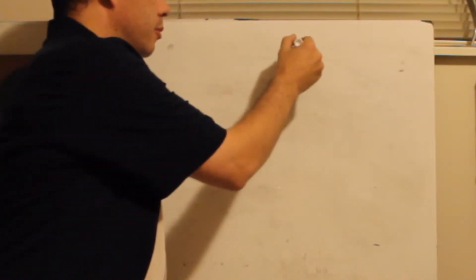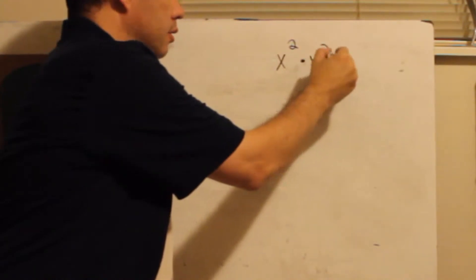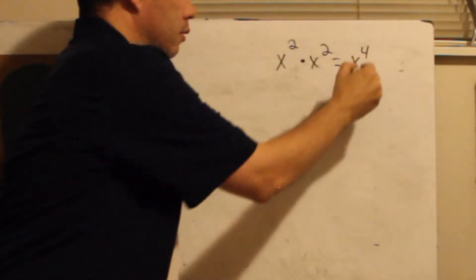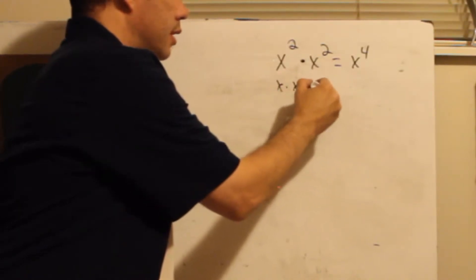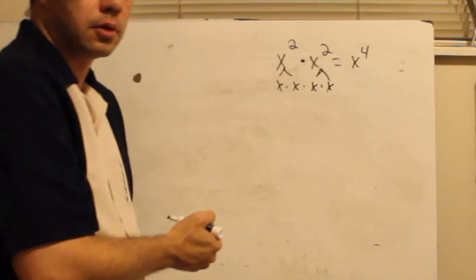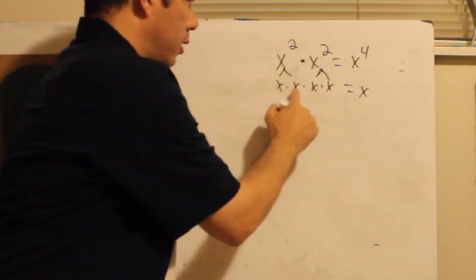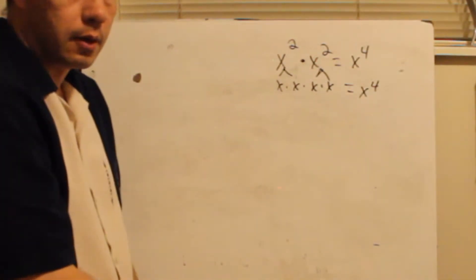So in algebra, you might have learned x squared times x squared is x to the fourth. Which makes sense because what's this? x times x times x times x, right? There's two of those and two of those. But if you rewrite it, you've got one, two, three, four x's multiplying times each other.